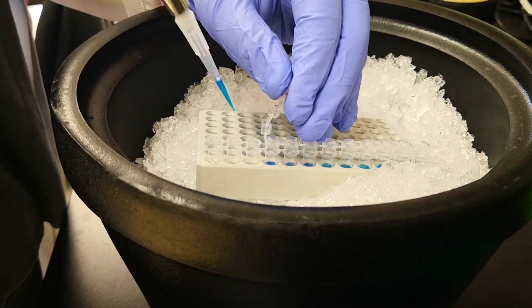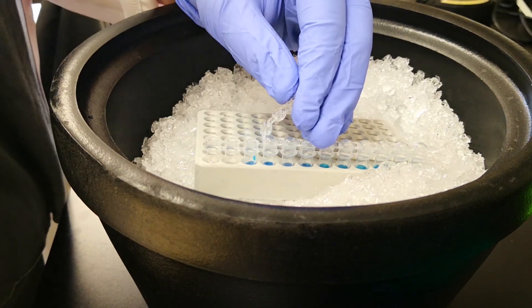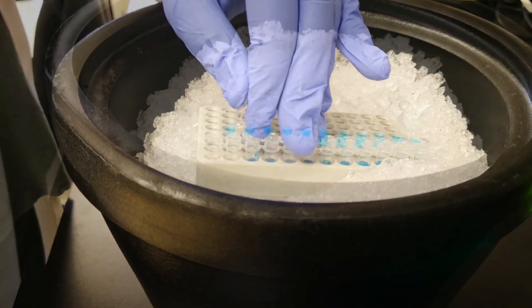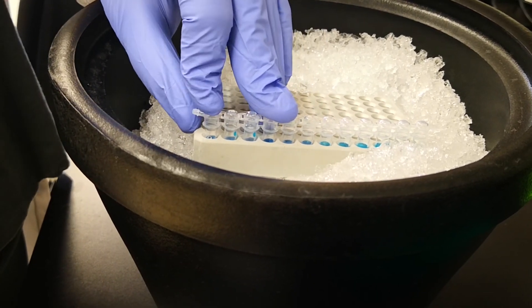So now all you have to do is pipet the combined volume of master mix into each PCR reaction tube. Carefully add your template to each tube, and run it on your PCR machine. And maybe make an offering to your local PCR gods that everything works as planned.